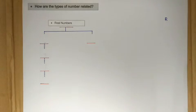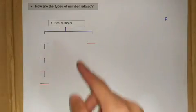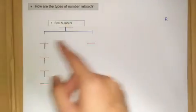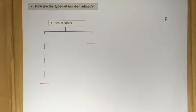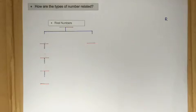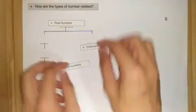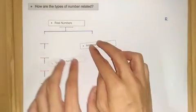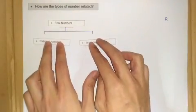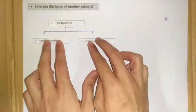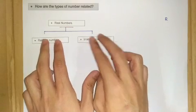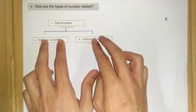So our topic here is about real numbers. Real numbers can be either rational or irrational, and a number cannot be rational and irrational at the same time.